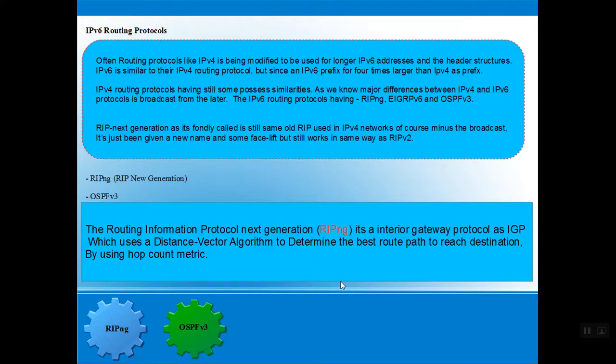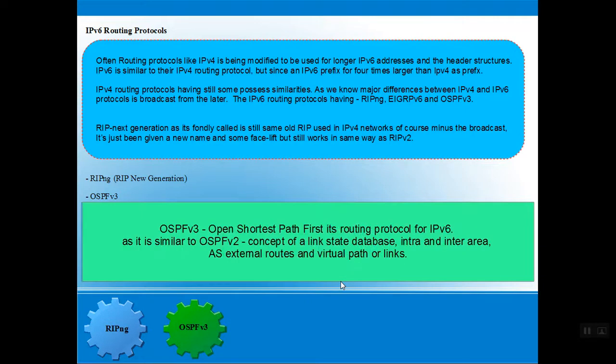Next we have OSPFv3 — Open Shortest Path First version 3. It is similar to OSPF v2 and finds the fastest path to move packets from source to destination. OSPFv3 uses a link-state database and supports external routing via virtual paths or links, finding the best path and giving the best result.